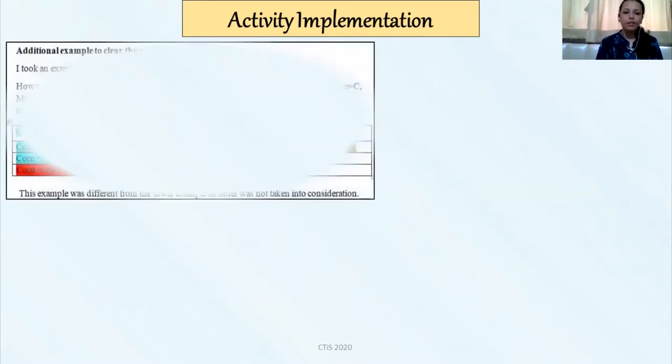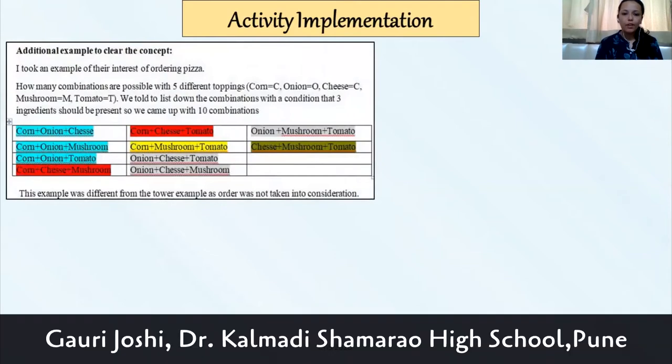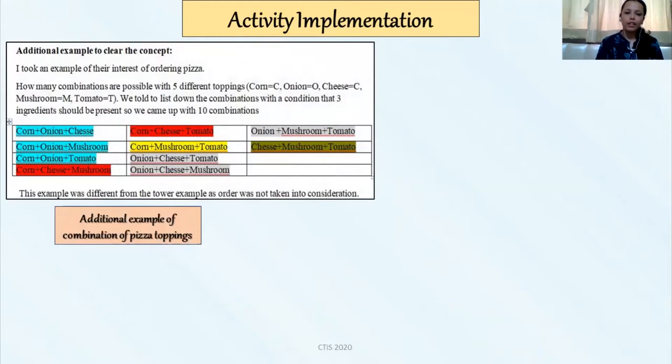Then the next example we did was about the pizza example, where students were asked to buy a pizza and design their own topping. Topping would be designed when five different ingredients were given and they need to select only the three ingredients. The answer that students gave was 10 different combinations can be made. Here we applied the approach of keeping one ingredient common. Each time one ingredient is kept common and the other two ingredients are repeated. This was very much easy for the students when we applied this approach.